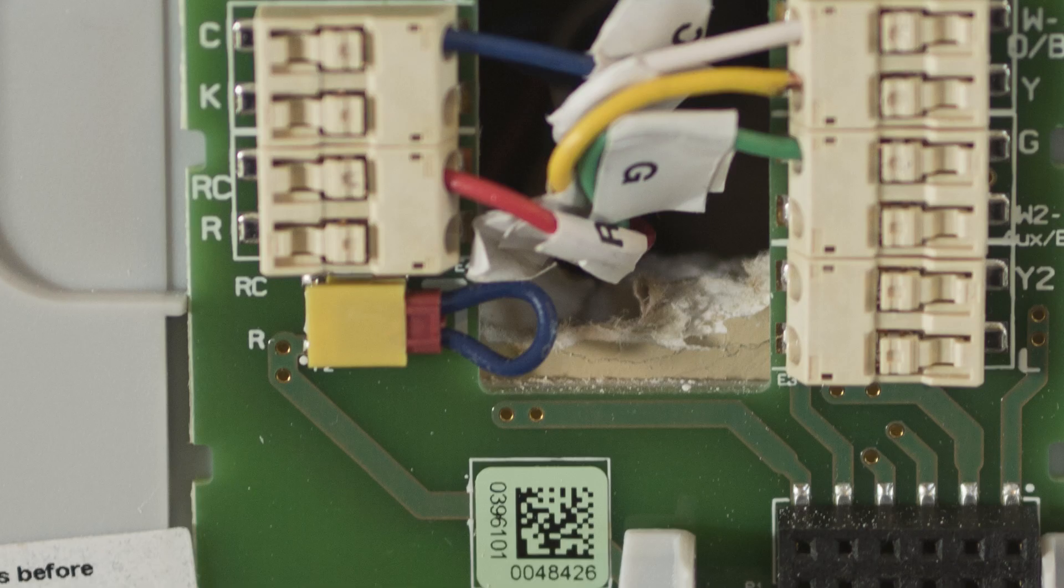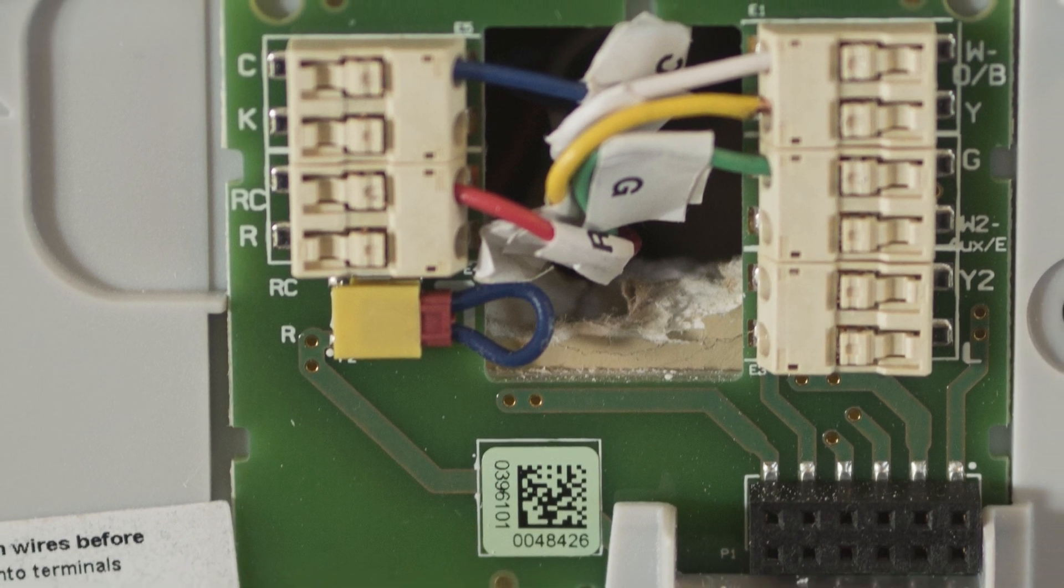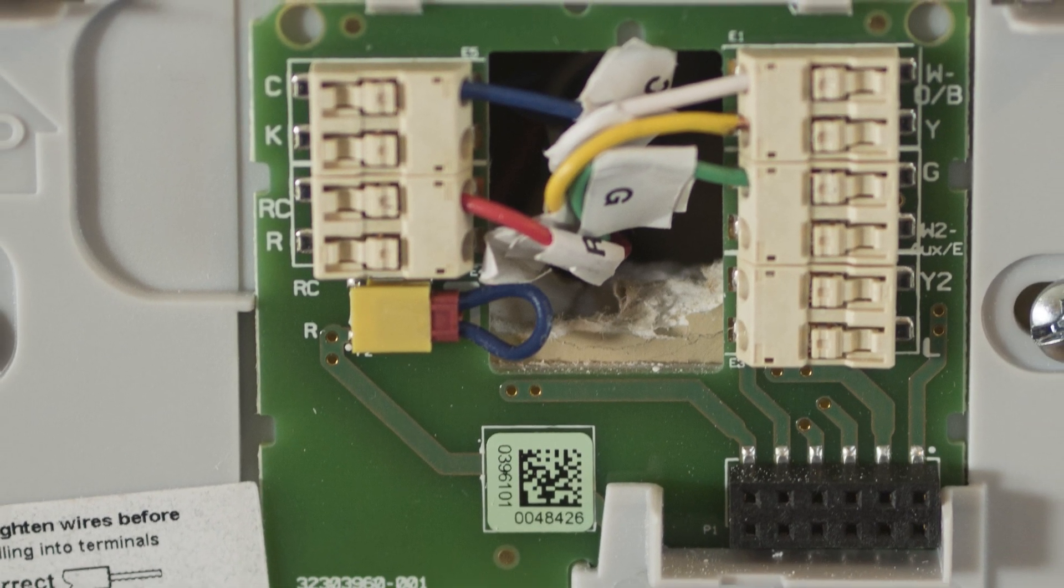Your new Wi-Fi thermostat has a jumper wire for connecting the R and RC terminals. It's located in the lower left of the terminal area and not in the same location where you would insert wires for the R and RC terminals. Keep this loop in place unless you have both R and RC wires. If you have both wires, remove the jumper loop by pulling on it and insert the wires into their respective terminals.